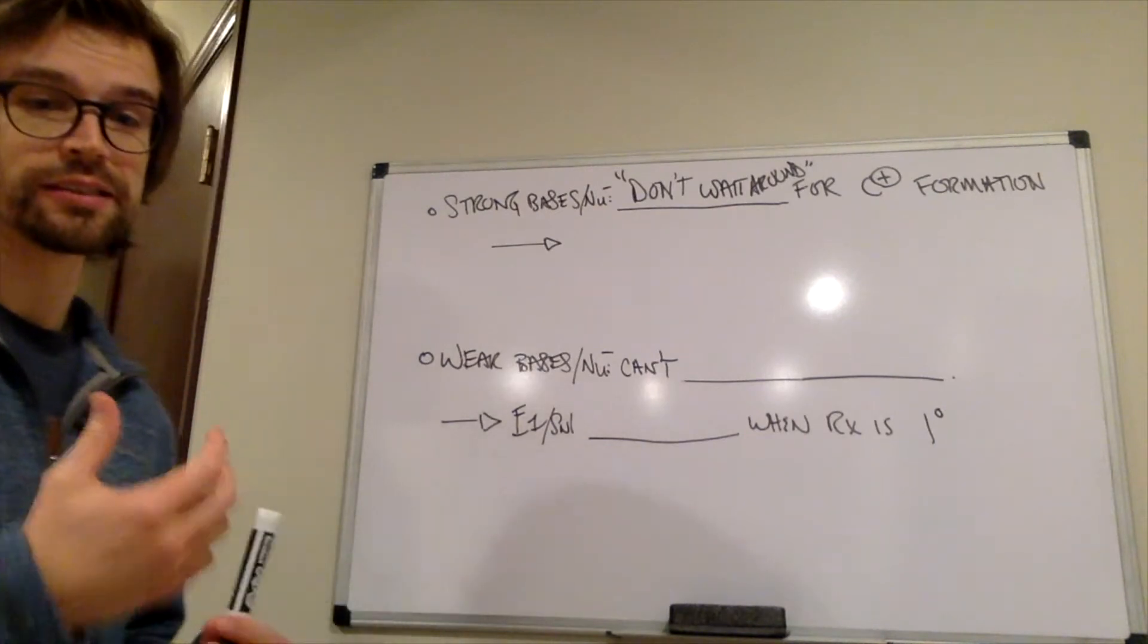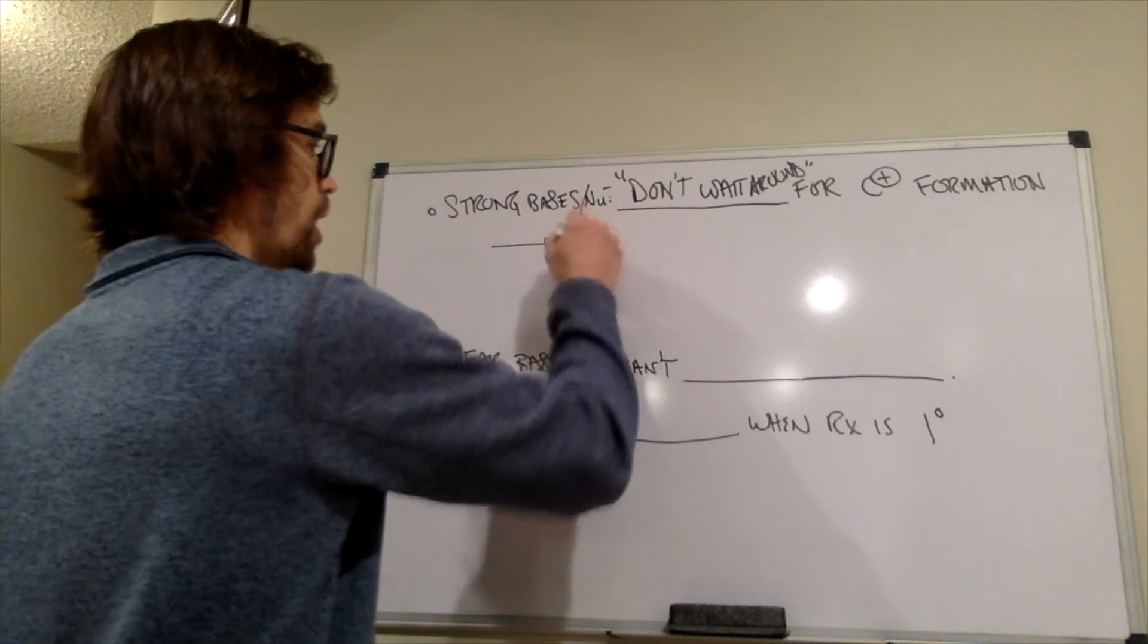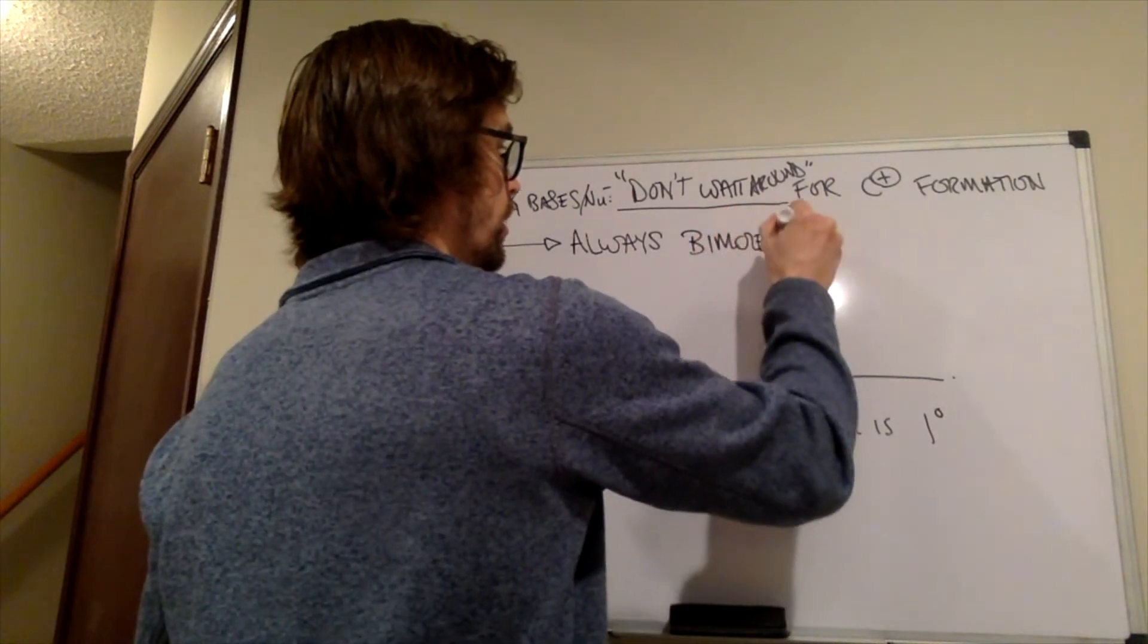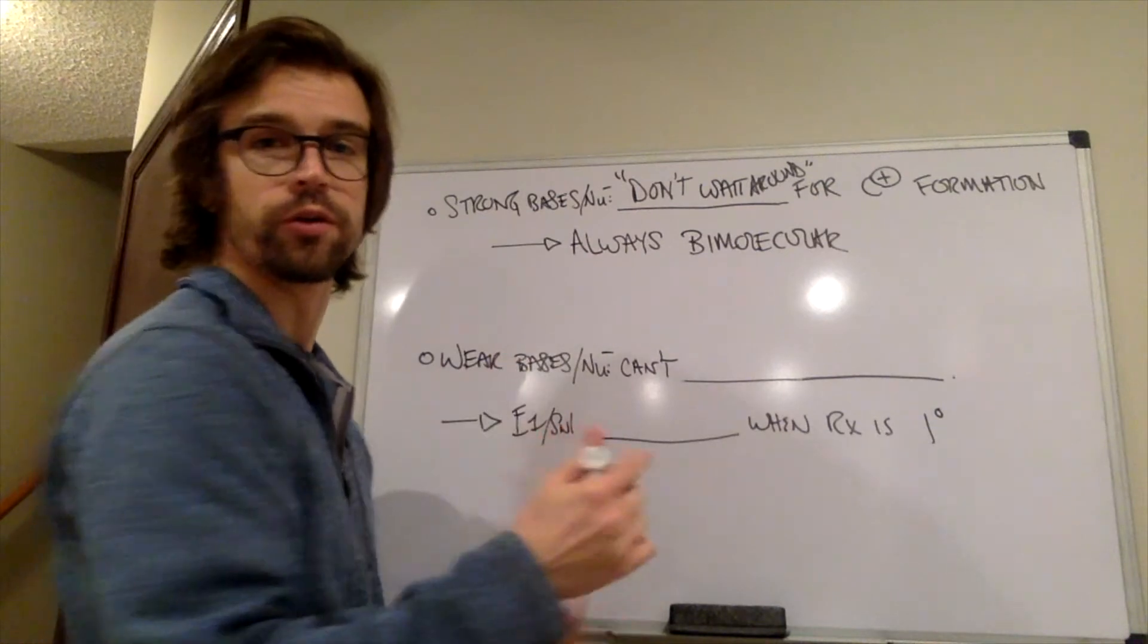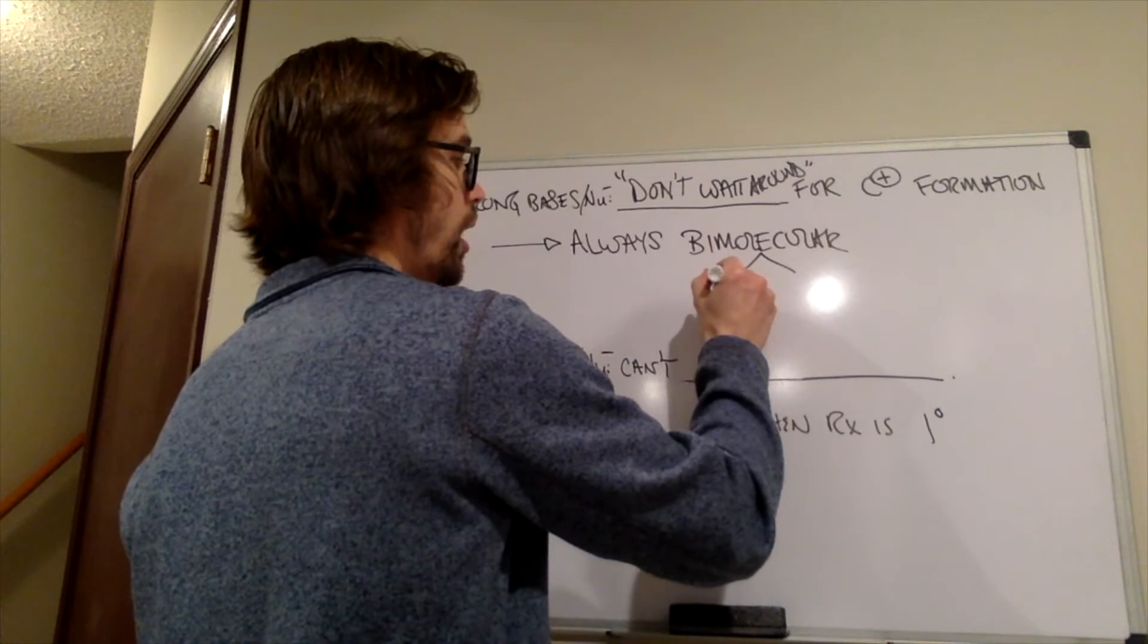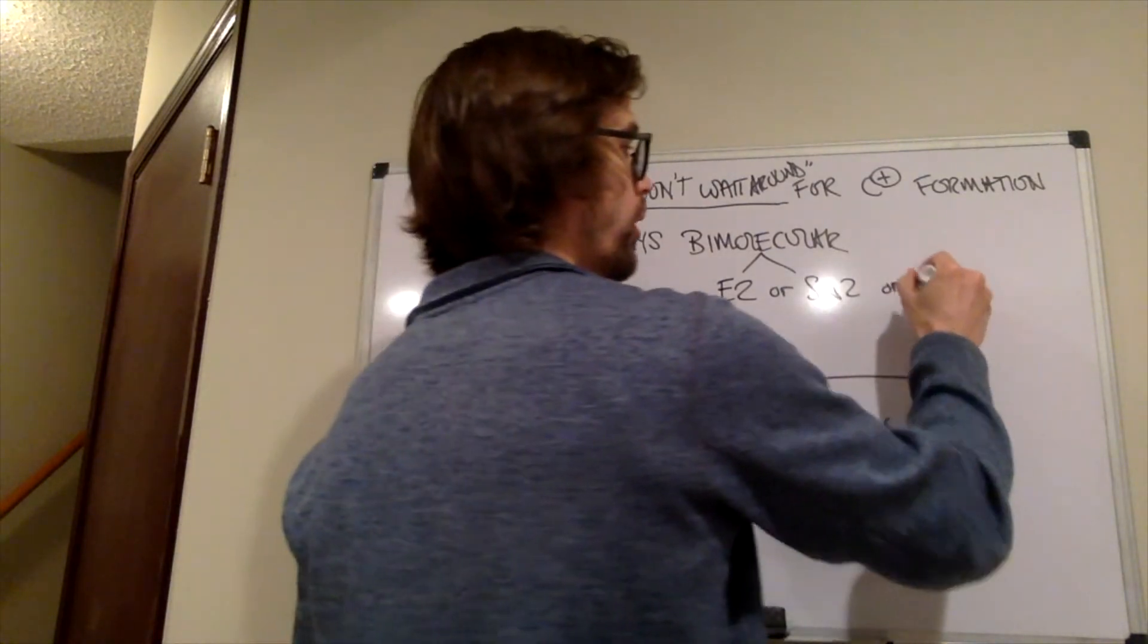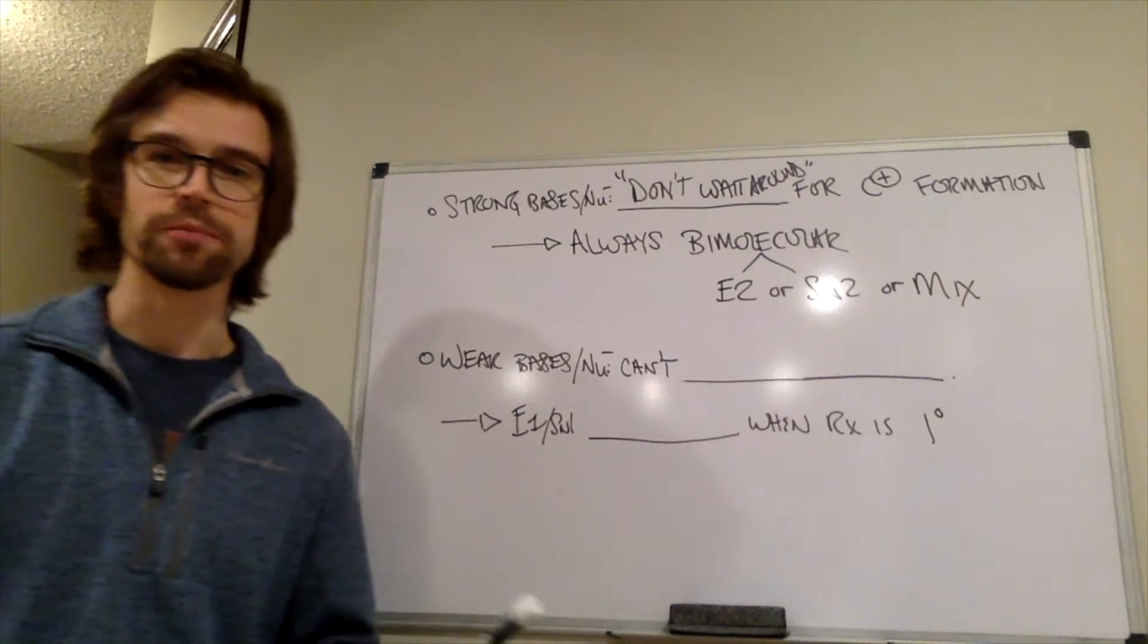That's what strong bases, strong nucleophiles do. So that means we will always be bimolecular if we have a strong base or nucleophile. So essentially the choices if we have a strong base or a strong nucleophile are, is it E2 or is it SN2? And then I'm going to put one more or, or is it a mixture of the two? Because it turns out it could be that as well.